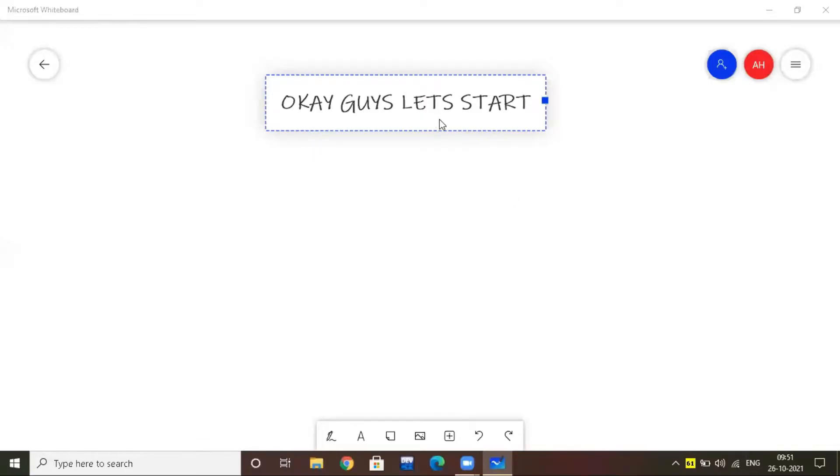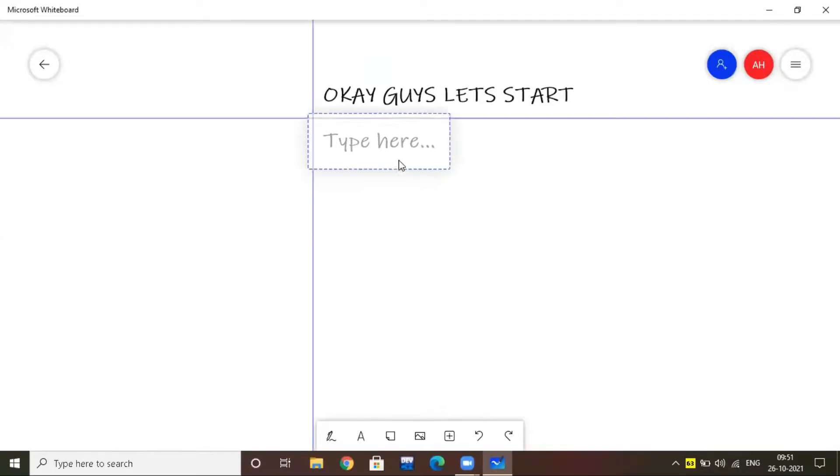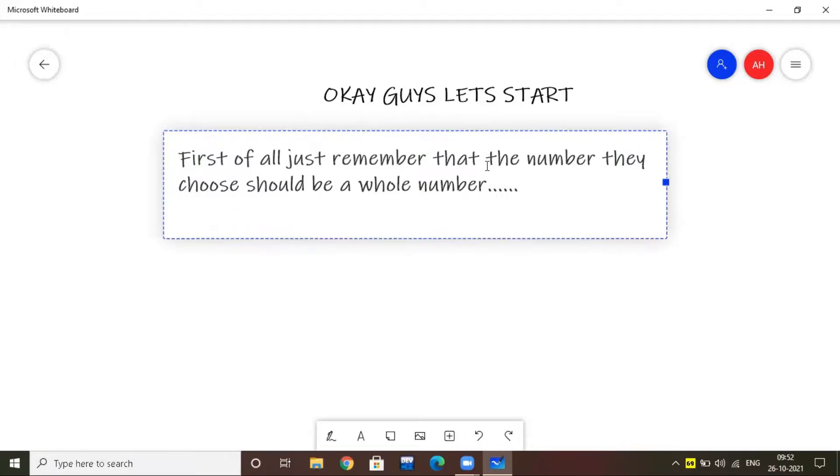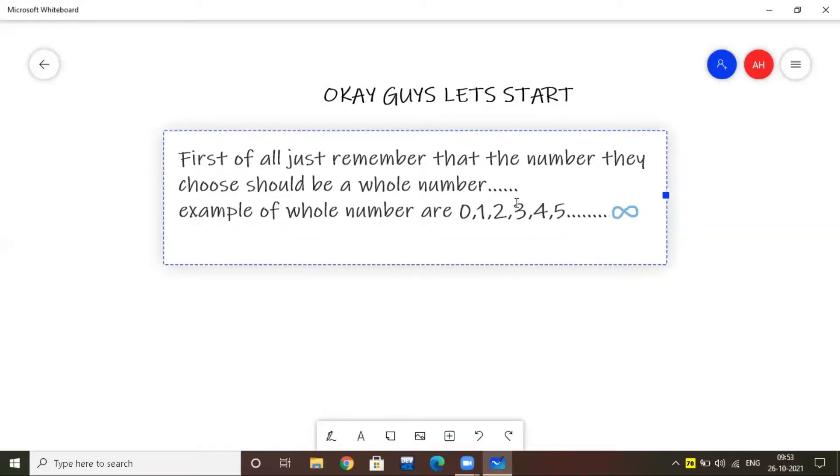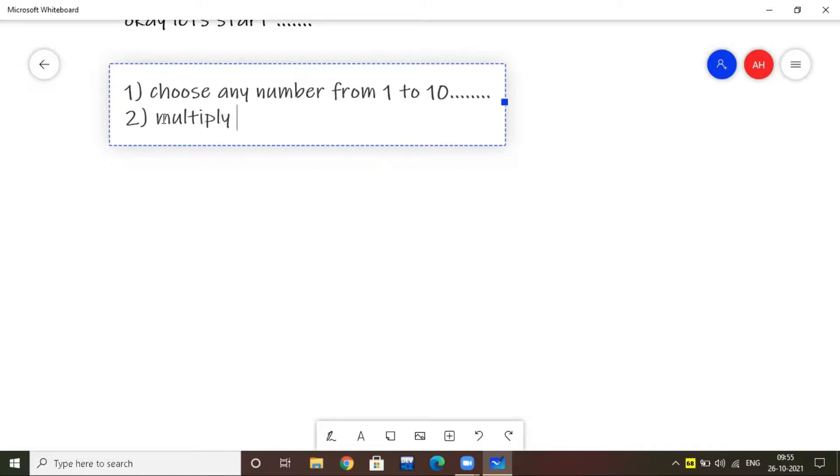Okay guys, let's start the video. First of all, just remember that the number they choose should be a whole number. For example, whole numbers: 0, 1, 2, 3, and so on to infinity. Okay, now let's start trick one. Choose any number from 1 to 10.